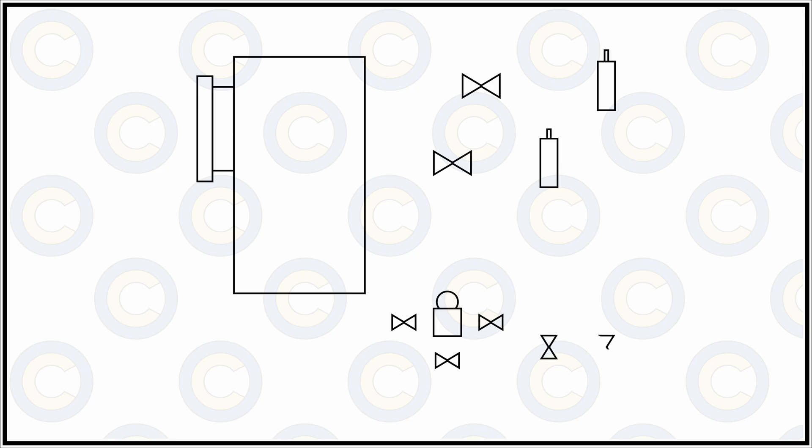So now continuing from where we left off, let us imagine a situation where the annual or the routine calibration process of the DP cell is due.